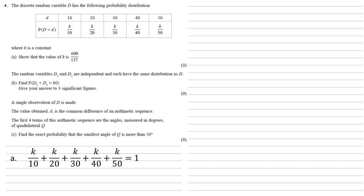To get rid of all those fractions, I multiply by the lowest common multiple, which is 600. Multiplying by 600, we get 60K plus 30K plus 20K plus 15K plus 12K equals 600. So 137K equals 600, hence K equals 600 over 137.